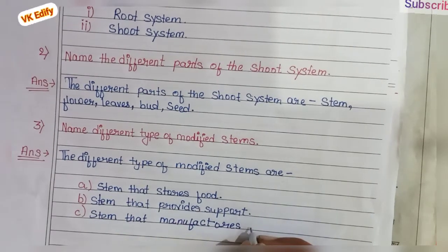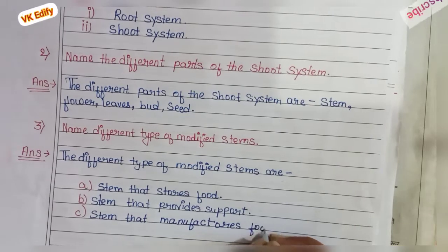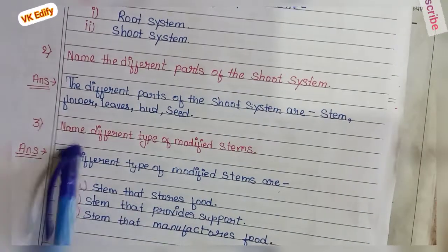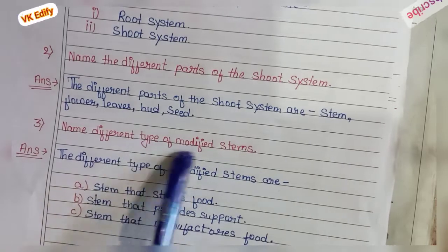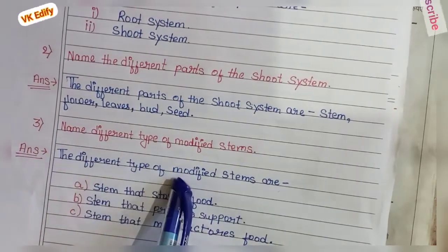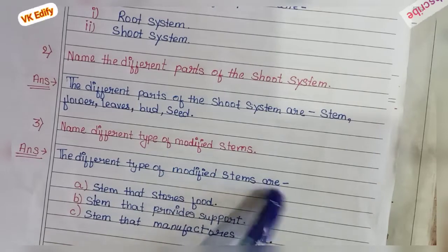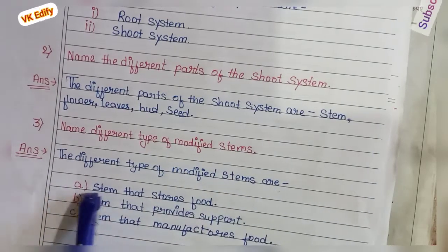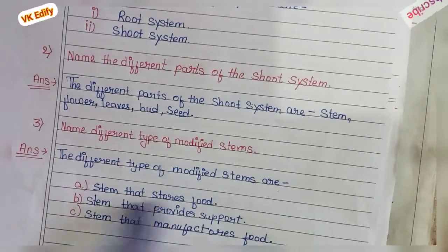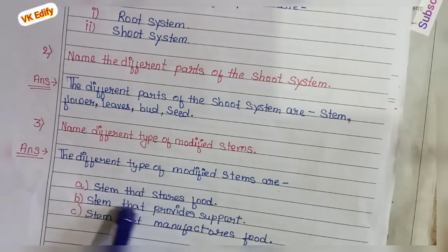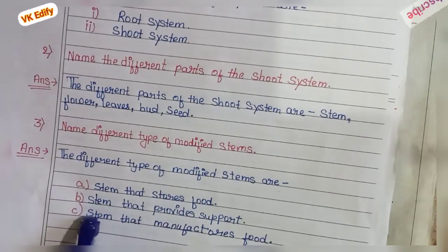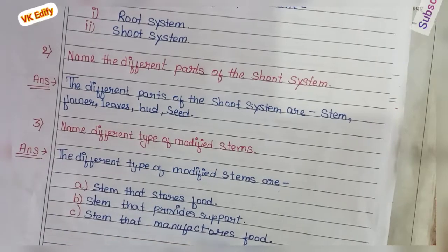Question 3: name the different types of modified stems. Answer: the different types of modified stems are — A. stem that stores food, B. stem that provides support, C. stem that manufactures food.